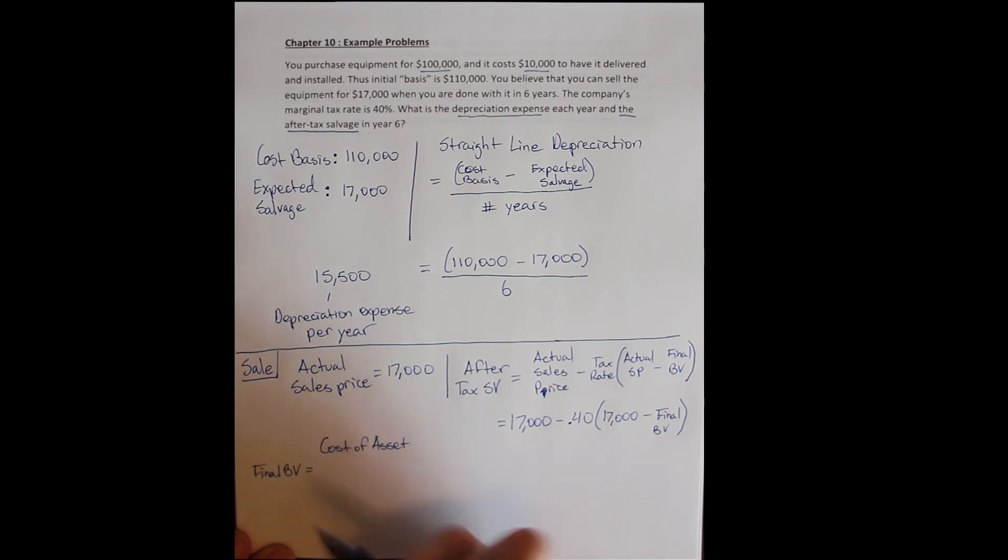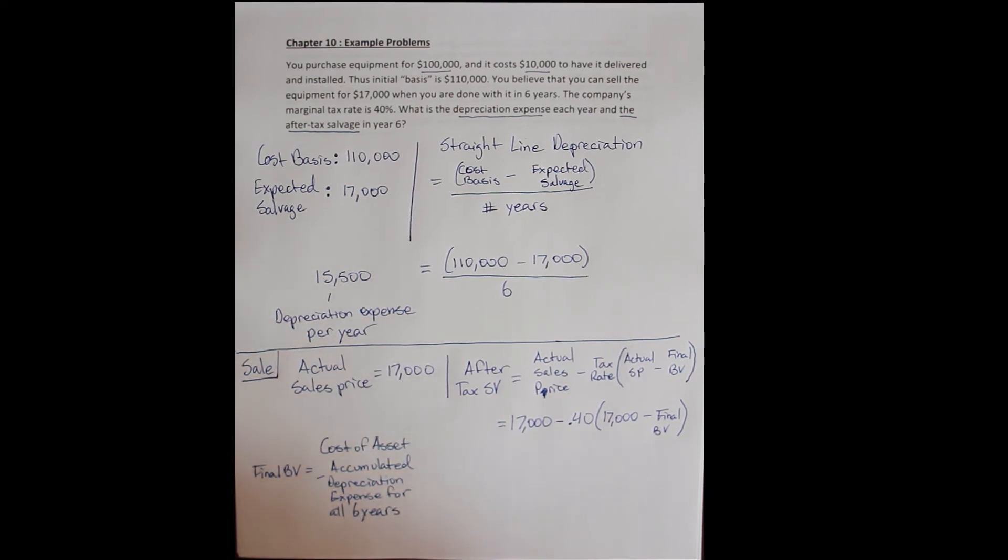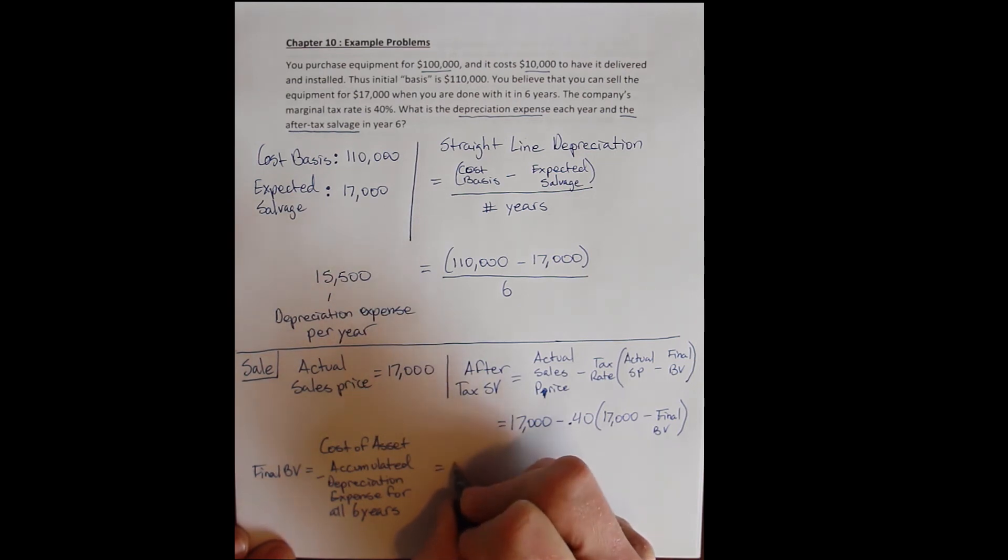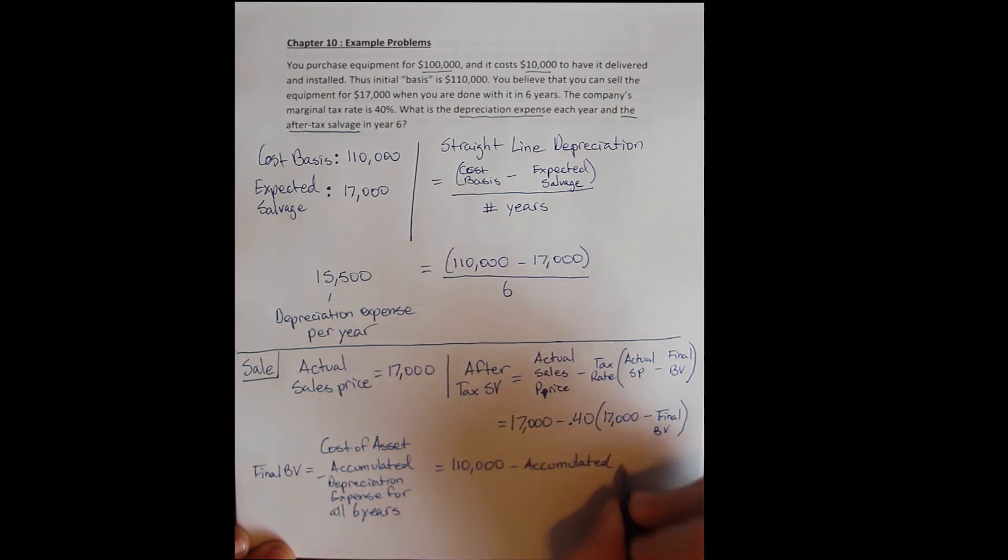And at the end of the asset's life, we subtracted accumulated depreciation expense for all six years. So I've subtracted six years of depreciation. And that is what the asset is currently now listed on my books for. So to calculate that, I look at the cost basis, $110,000. I subtract the accumulated depreciation.